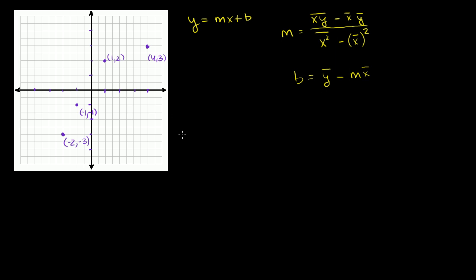So let's calculate m. To do that, let's calculate the components. The mean of the x's is going to be equal to negative 2 plus negative 1 plus 1 plus 4, all over 4 data points. These two guys cancel out. Negative 2 plus 4 is 2. 2 over 4 is equal to 1 half.